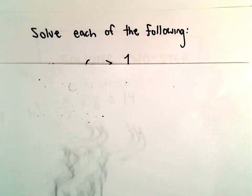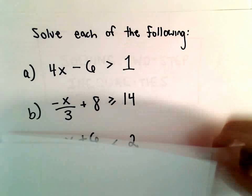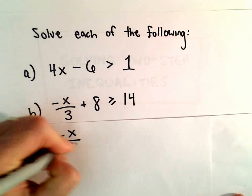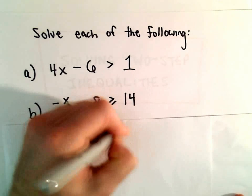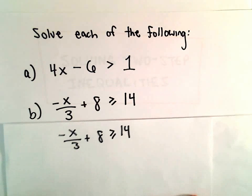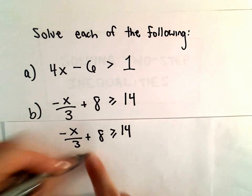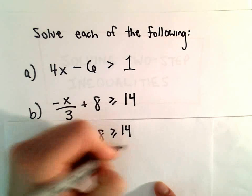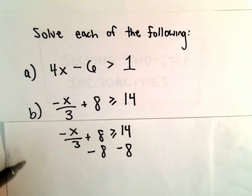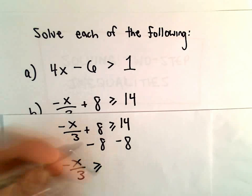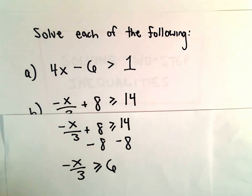Let's go ahead and jump on to part B. Here we have negative x over 3 plus 8 greater than or equal to 14. The first thing I'm going to do is try to isolate the term involving x, so I'm going to subtract 8 from both sides. That'll leave us with negative x over 3 greater than or equal to 6.